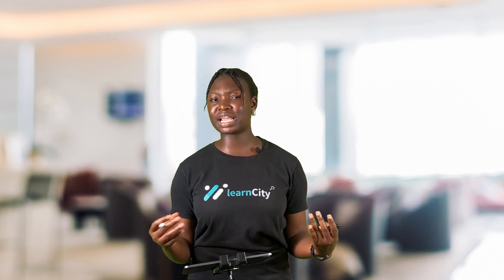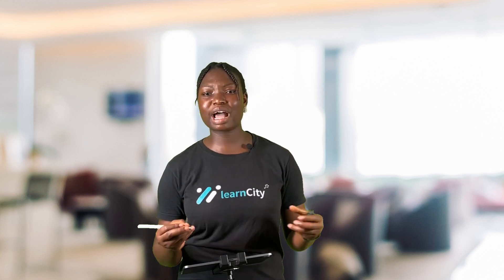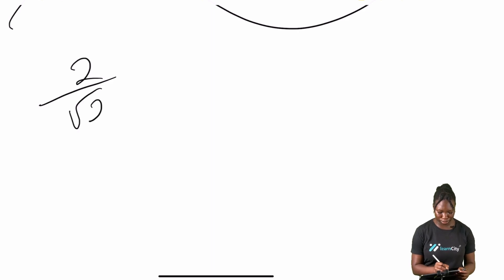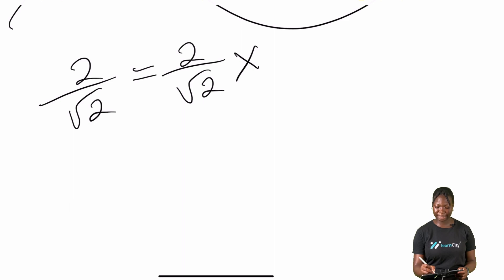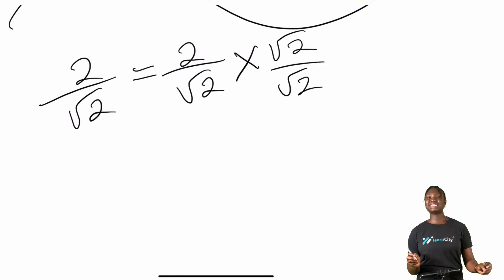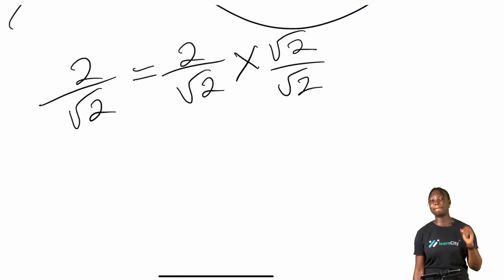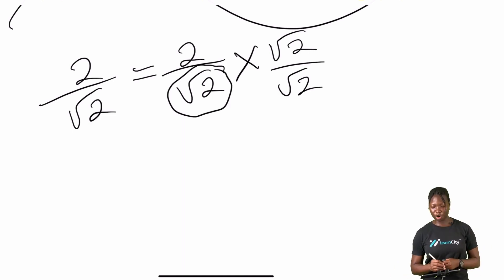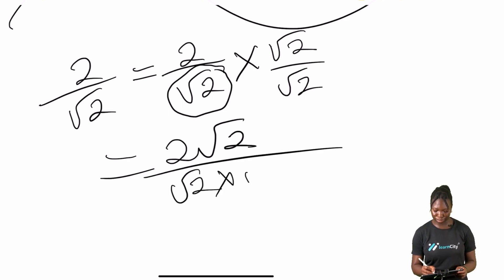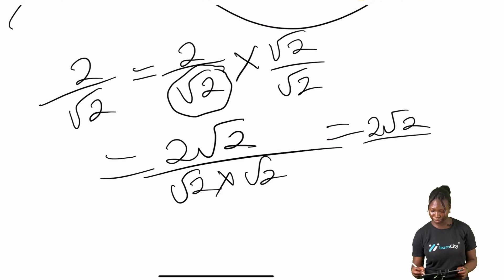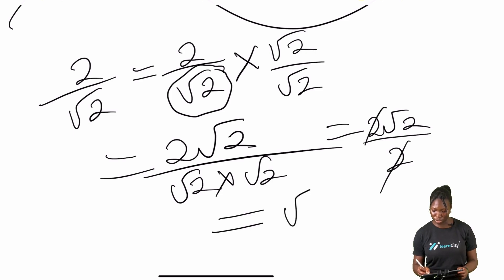Before we move forward to solving examples, let me explain what it means to rationalize a surd. In this case, we have two over root two. We have it to be two over root two, multiplied by root two over root two — that is, multiplying the numerator and denominator by the denominator itself. So we have two over root two times root two, which gives us two root two over two.